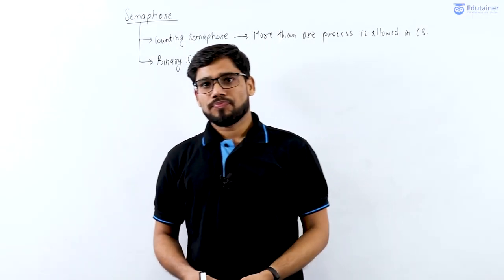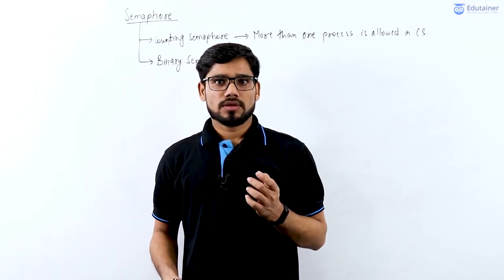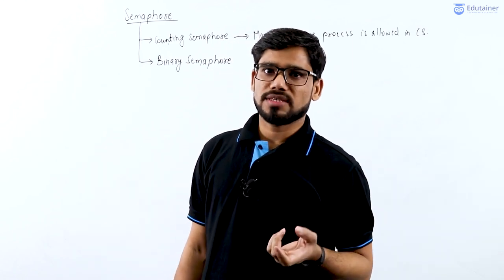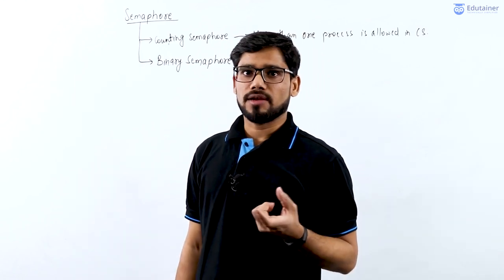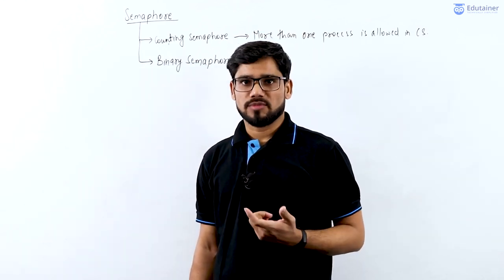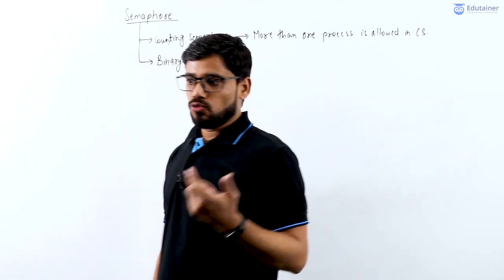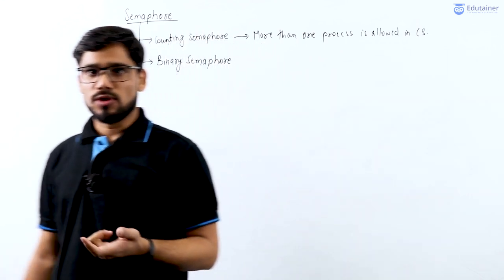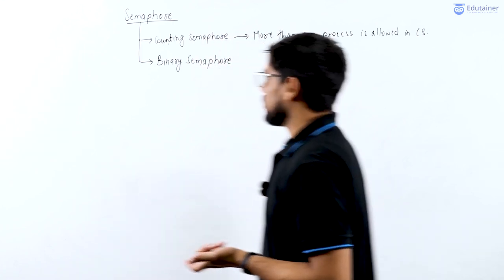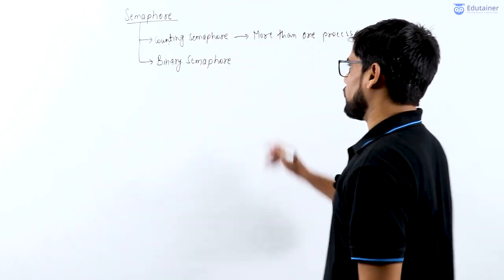Hello everyone. Mutual exclusion — the basic primary requirement — is not fulfilled by the counting semaphore. So to fulfill this mutual exclusion requirement, we come up with a binary semaphore.